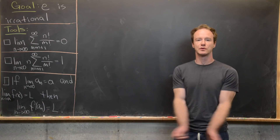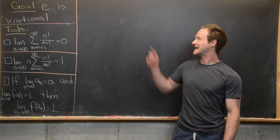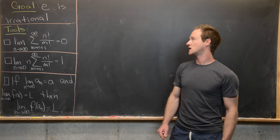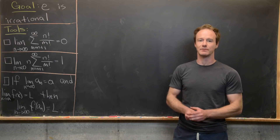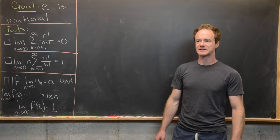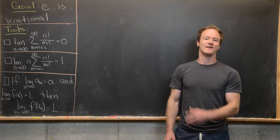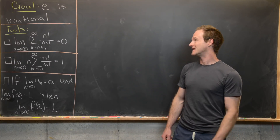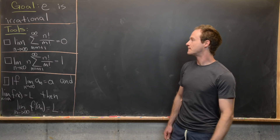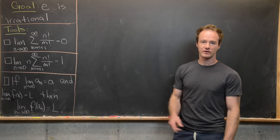Our goal for this video is to prove the very classic result that e — Euler's constant — is an irrational number. There are a bunch of proofs of this, but we're going to prove it via a fairly simple method using a limit, which we'll get to later. We're going to use the following three tools.